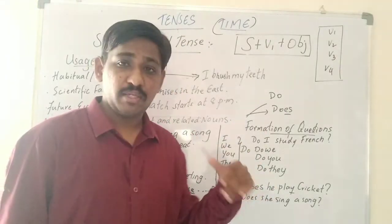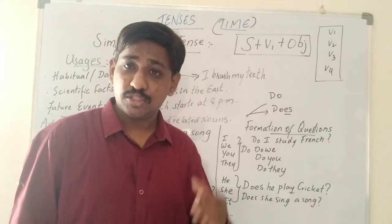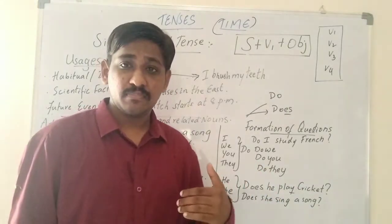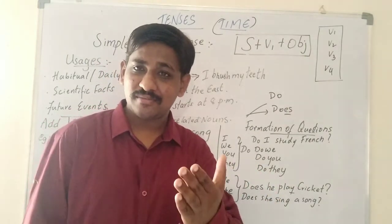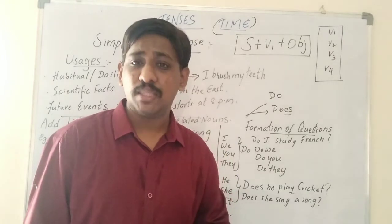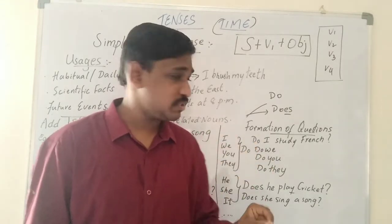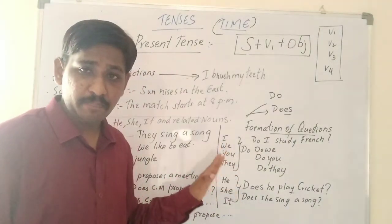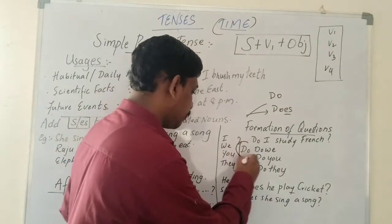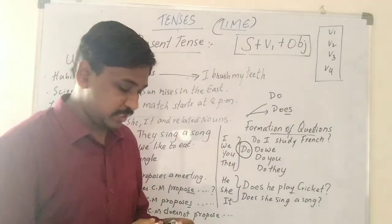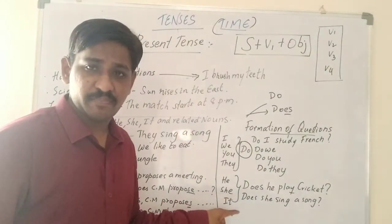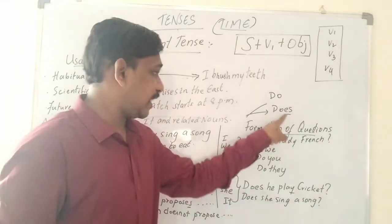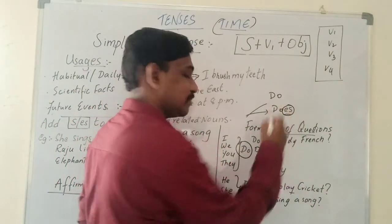You watch TV — do you watch TV? They swim in the pool — do they swim in the pool? Remember: for I, we, you, they, use do. For he, she, it, use does. Does has -s in it, just like the -s rule for he, she, it.